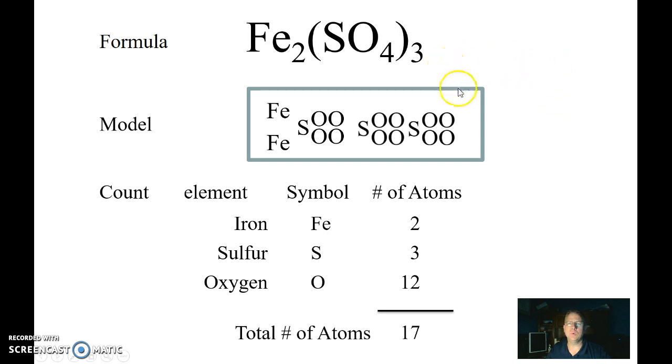If I don't want to draw out the model, seeing that there's two irons is pretty easy. This three over here also, because it's outside the parentheses, you can think of it a lot like we do in mathematics, where the three outside the parentheses, we would use distributive property to multiply it by everybody on the inside. So when I'm looking at my sulfur, I've got one inside the parentheses times the three outside gives me three sulfurs. Inside, I've got four oxygens times that three gives me 12 oxygens.